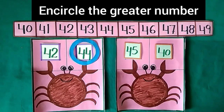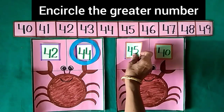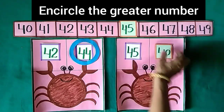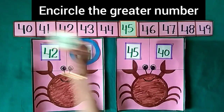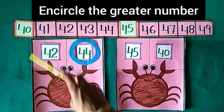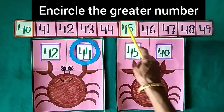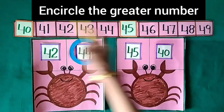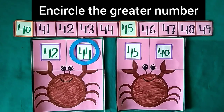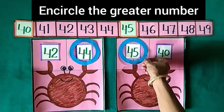The next sum: there are 2 numbers — 45 and 40. The first number is 45 and the second number is 40. Look at the number strip — 45 comes after 40, so 45 is the greater number. So we encircle it.